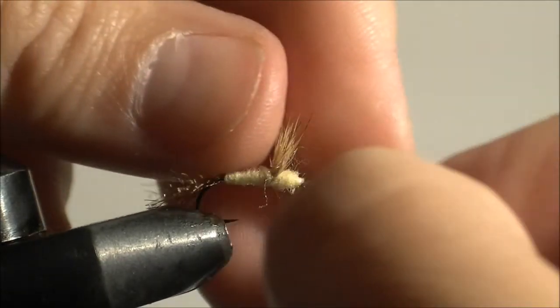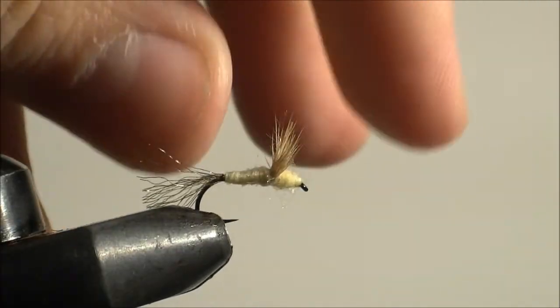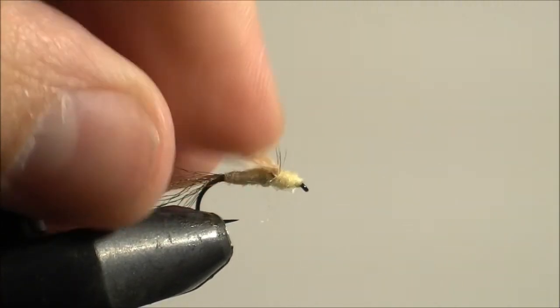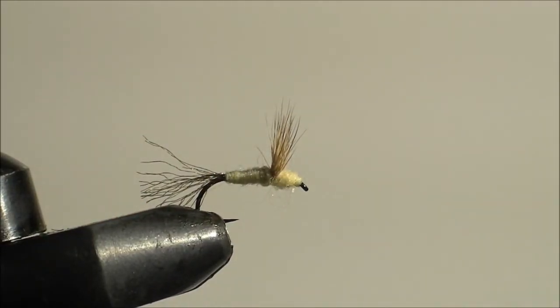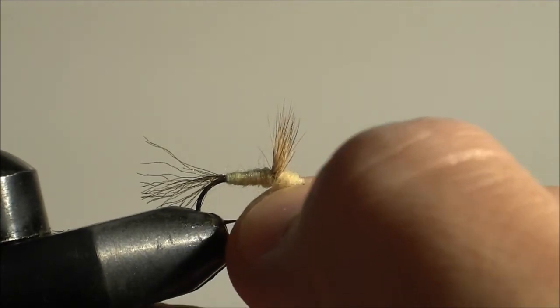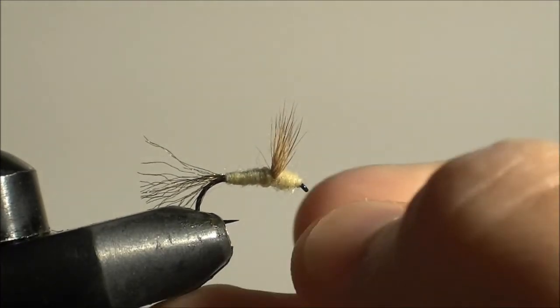So then I take these and then I kind of splay the deer hair out because it's still pliable. You can still manipulate it however you want to. I don't use head cement generally. I've never had a fly come unraveled. If you take your time and build it carefully and watch what you're doing and use the appropriate amount of thread and not add too much and have a nice, small head on it, then it's not generally a problem.